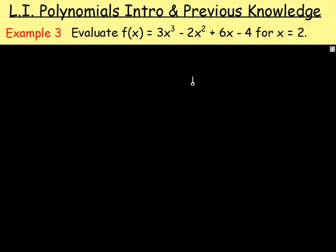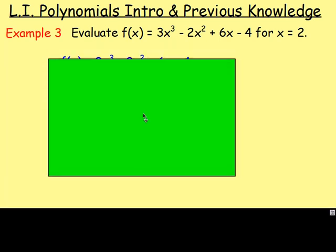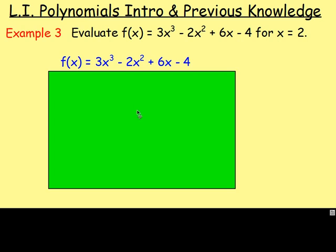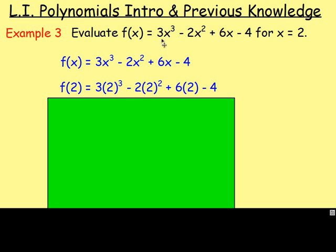And something else that we've done, something else with previous knowledge. If you think back to functions, well we've been evaluating functions with different values of x. So with this example here, evaluate f of x equals 3x cubed minus 2x squared plus 6x minus 4 for x equals 2. So we're starting off with f of x. If x was 2 we'd be wanting to work out f of 2. So we're replacing x with 2. So over here replace every single x with 2.